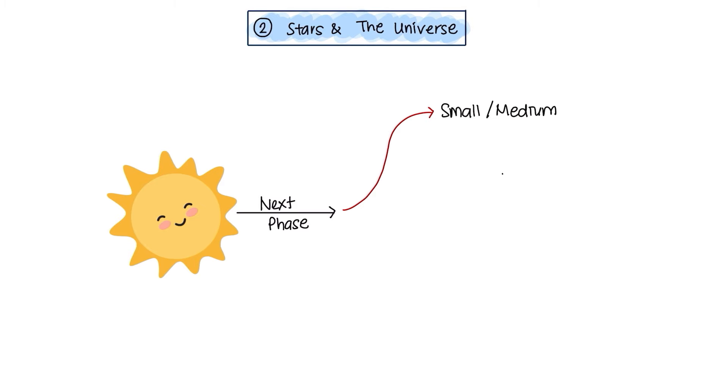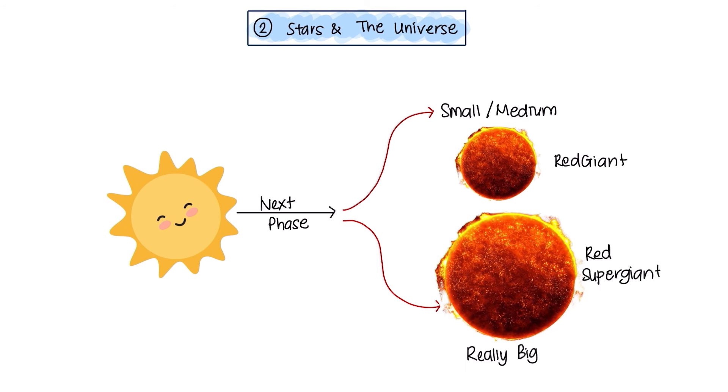If it was a small to medium star size, like our Sun, then it would form a red giant. But if it was a really big star, then it would form a red supergiant. Each of these two types complete their star in two different ways.